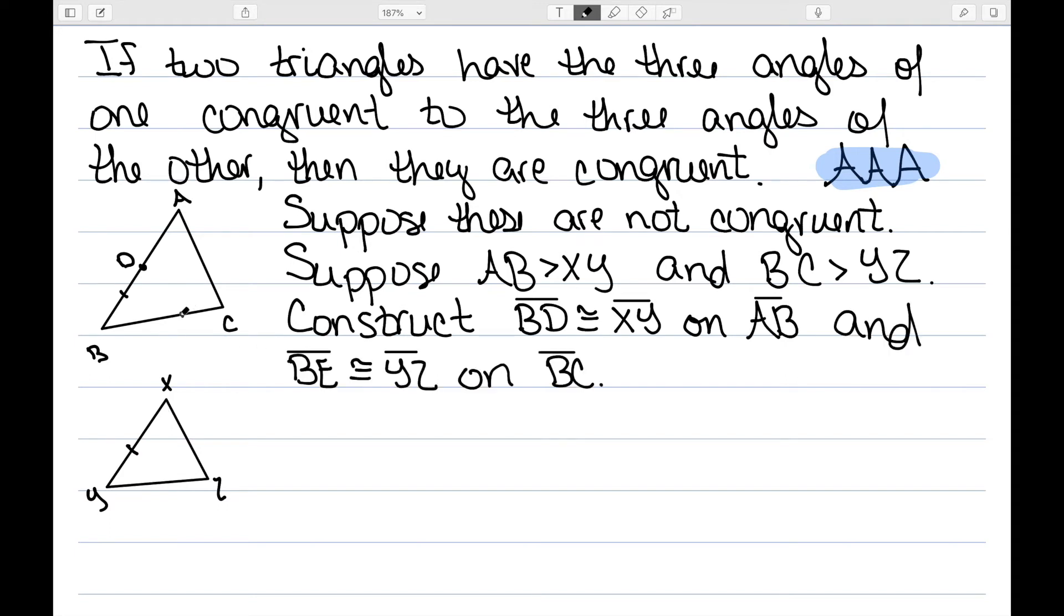I'm also going to construct a point E on segment BC such that BE is congruent to YZ. So essentially I'm just going to cut off this little triangle here, so that these here are congruent. That tells me triangle BDE is congruent to triangle YXC by side angle side or by angle side angle.